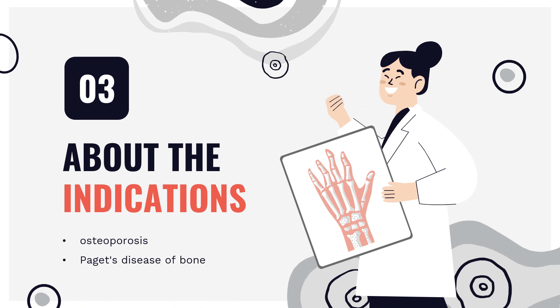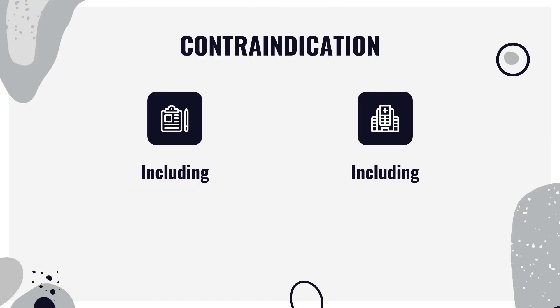What is risedronate used for? Risedronic acid is indicated for the treatment of osteoporosis in men, treatment of Paget's disease, treatment and prevention of osteoporosis in postmenopausal women, and treatment and prevention of glucocorticoid-induced osteoporosis.